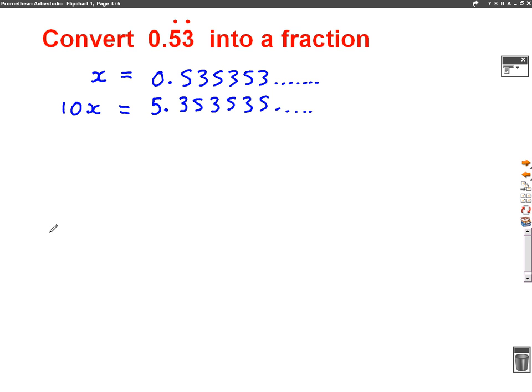So we're going to times it by 10 again. So we'll have 100x as well this time. So when we get 100x, we times it by 10 again. Make sure it all lines up. This time we'll get 53.535353. And that's good news now, because we can see that the 100x and the x on its own, the decimals line up on these ones.